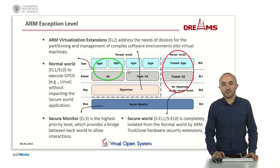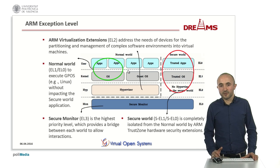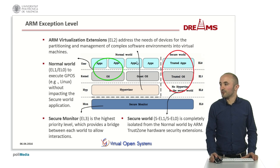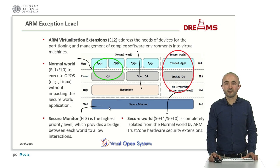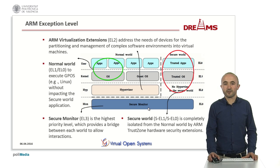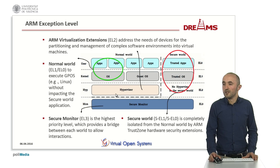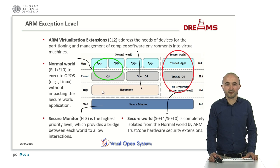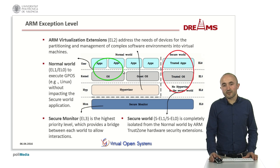So how will we apply this on the ARM architecture? First, let me introduce the ARM architecture. The ARM processor is split into two compartments: the secure world and the normal world. The secure world is totally isolated from normal world access. We have the secure monitor layer, which is always secure — it is the highest priority level and provides a bridge to communicate between the normal world and the secure world. In the normal world, we have an additional hypervisor mode layer which addresses the needs of devices for partitioning and management of complex software environments into virtual machines. As in the secure world, we also have kernel space and user space in the normal world.